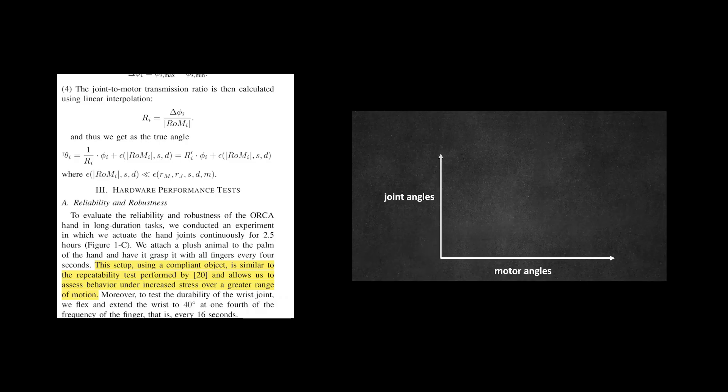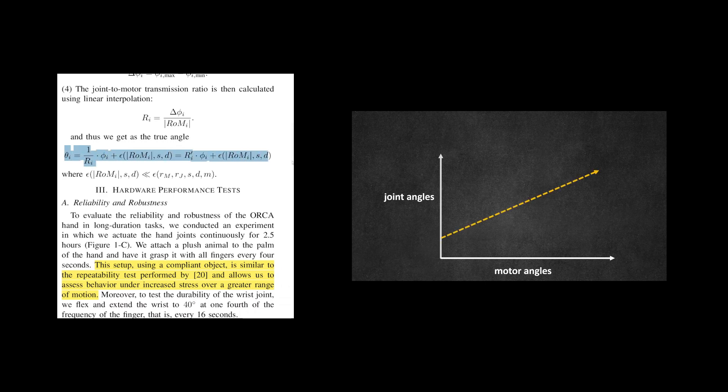By running a single full-range motion, the Orca hand can calibrate a linear mapping model between motor angles and joint angles. Feeding this empirical model into simulation yields a digital twin that is nearly indistinguishable from the real hardware.